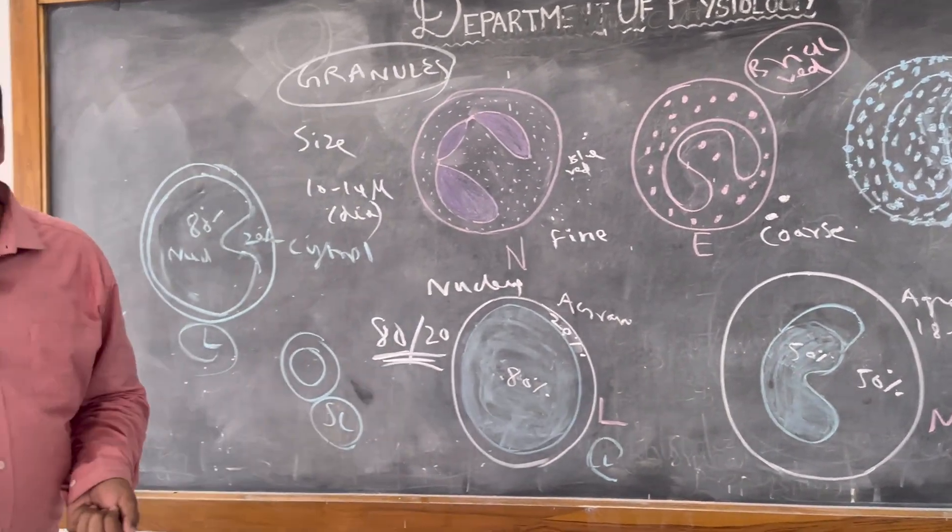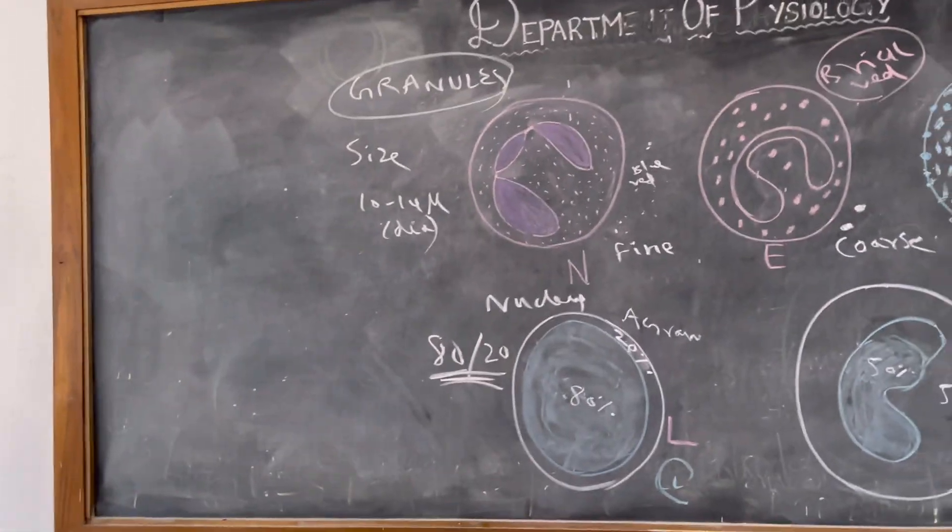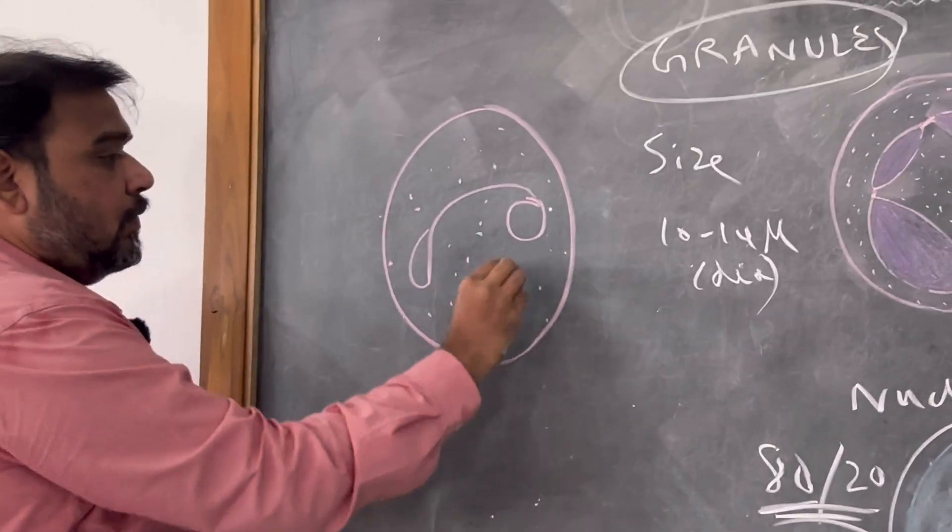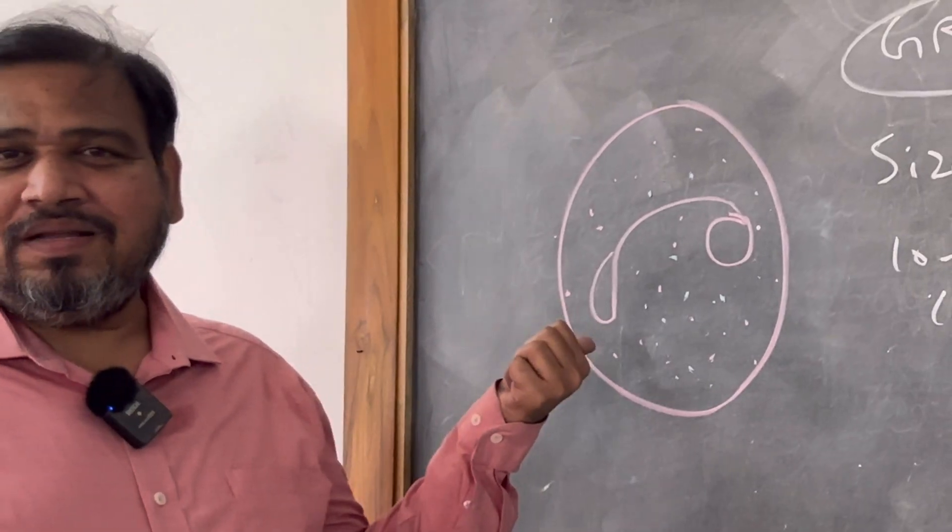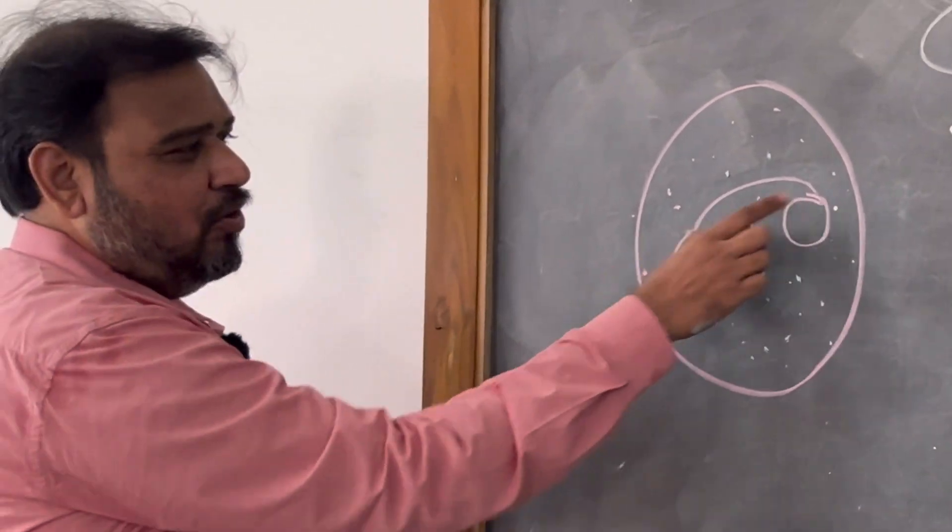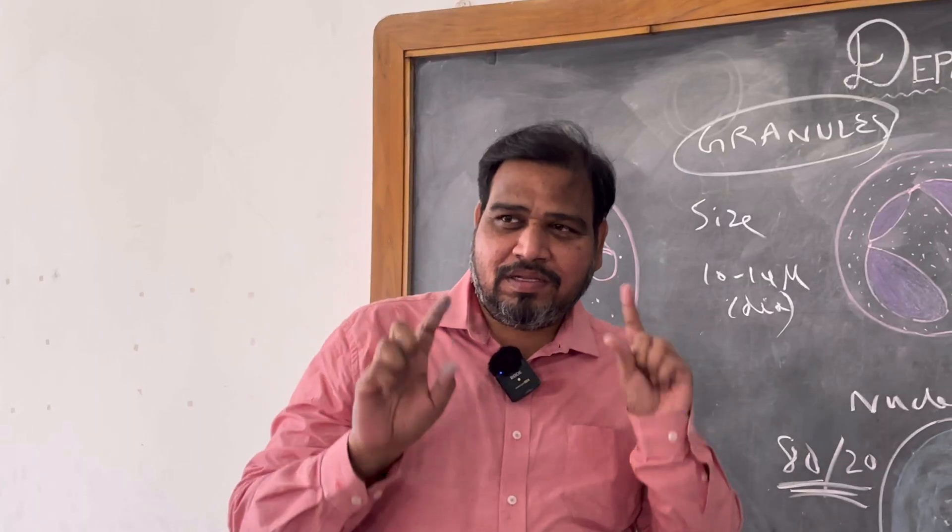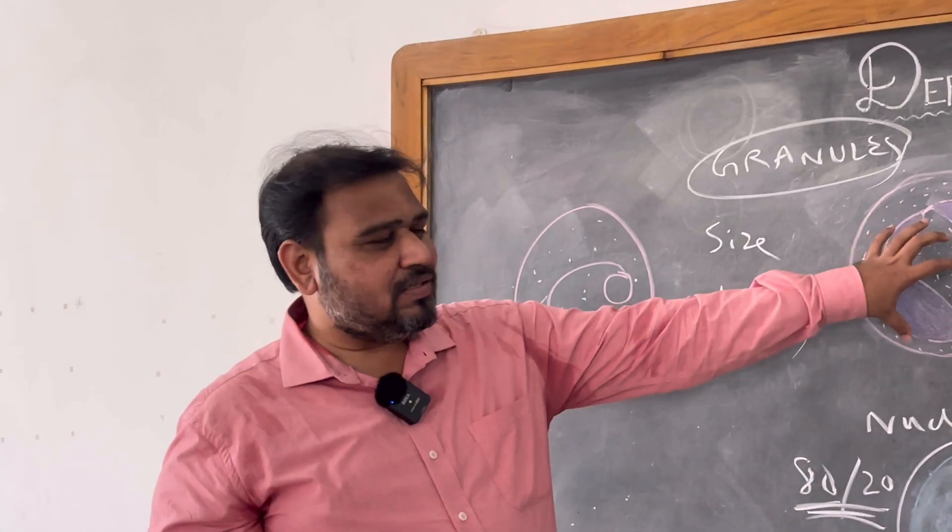Now coming to one more clarification. Now I will again ask you a question: when I ask what is this WBC, many will be telling eosinophil because it is like bilobed spectacle shape.